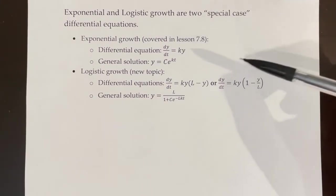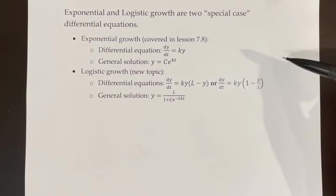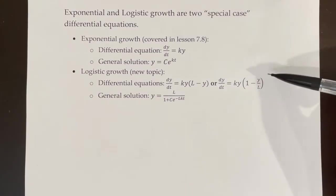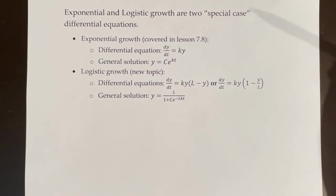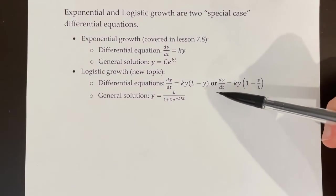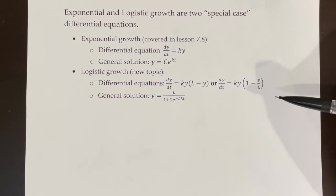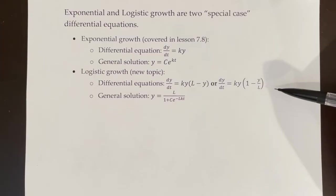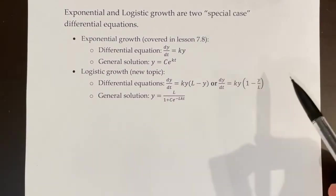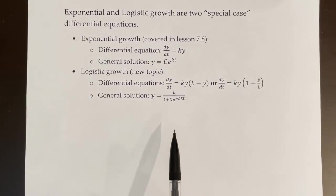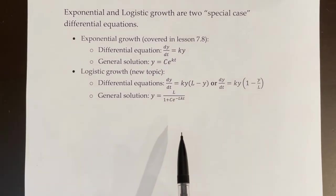For logistic growth, our new topic in this lesson, we have two possible differential equations that model the same thing, so it's important to keep in mind that these are actually the same even though they look different. The differential equations are dy/dt equals ky times (L minus y), or dy/dt equals ky times (1 minus y over L). The general solution for either one is y equals L over (1 plus ce to the power of negative Lkt).